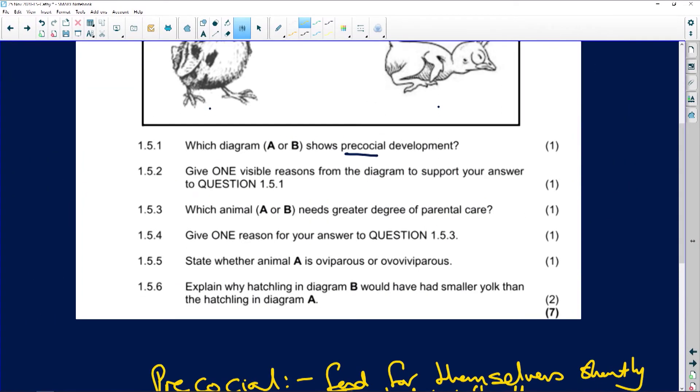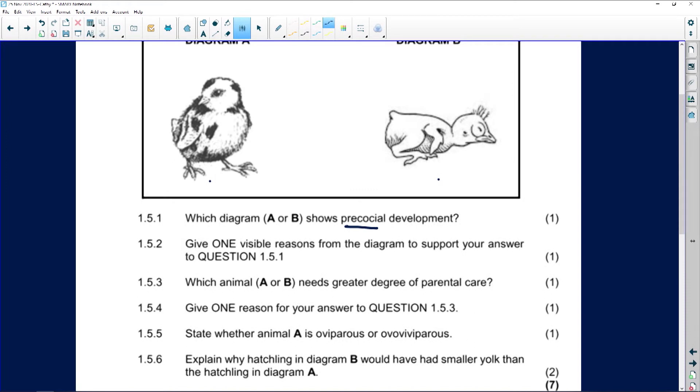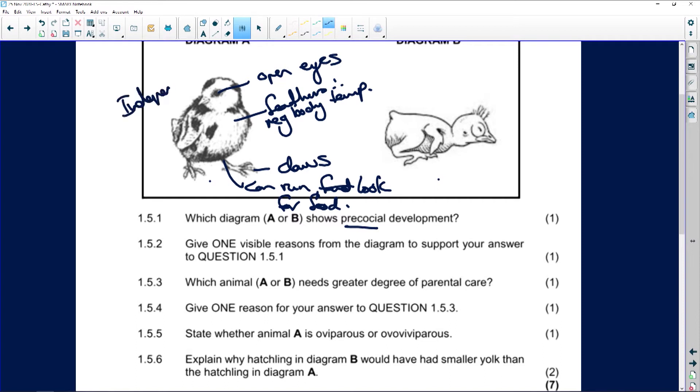So let's quickly have a look here. We say, give one visible reason that the diagram supports your answer. Well, if we just look here, what do you see? You see open eyes, body covered with feathers, therefore regulate temperature. Nice little claws, legs can run, look for food. Little independent number, so independent.